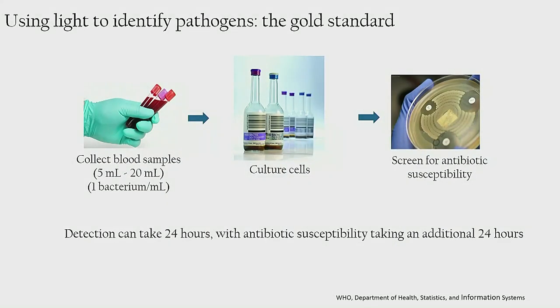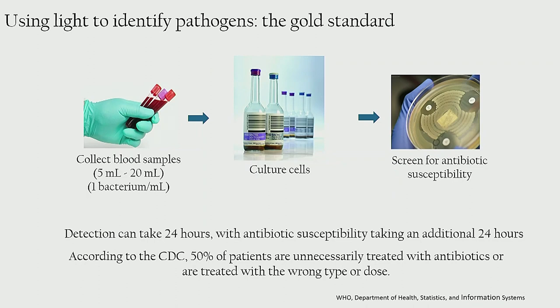Then once you've identified bacteria in the sample, you have to determine which antibiotics it's going to respond to. That screening for antibiotic susceptibility is usually done by taking the bacterial cultures, putting them on an agar plate with various concentrations of antibiotics, and just seeing where the bacteria die. This test typically takes on the order of about two days. Meanwhile, a doctor prescribes either broad-spectrum antibiotics or antibiotics based on empiric guidelines. According to the CDC, roughly about half of all patients are either unnecessarily treated with antibiotics or given the wrong type or the wrong dose, which is why antimicrobial resistance is becoming such a huge problem.